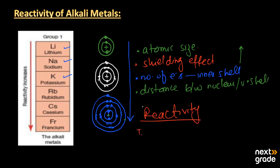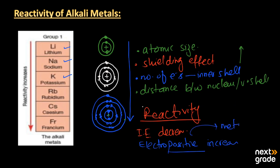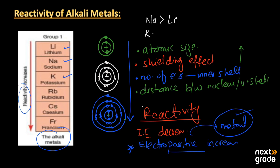The simple reason is that ionization energy decreases down the group, and electropositivity — the electropositive character — increases down the group. When an atom or metal loses electrons easily, it is more electropositive, and its reactivity increases. So sodium is more electropositive and more reactive than lithium, potassium is more electropositive than sodium, and francium has the highest electropositive character and is the most reactive of all the alkali metals.